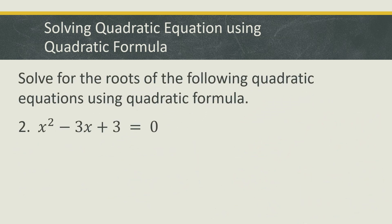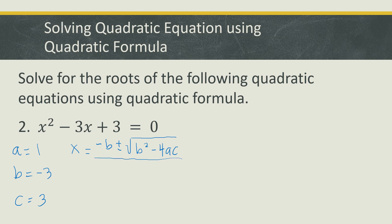Example number 2: x squared minus 3x plus 3 is equal to 0. This equation is also not factorable. So again, we need to know the values of a, b, and c. The value of a is 1, the value of b is negative 3, and the value of c is positive 3. We substitute these values into the formula: negative b plus or minus the square root of b squared minus 4ac, all over 2a.